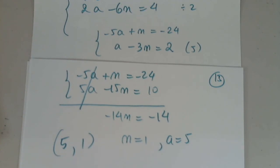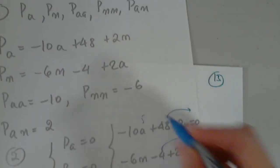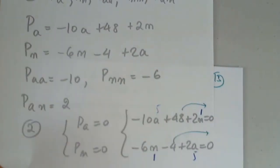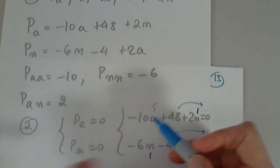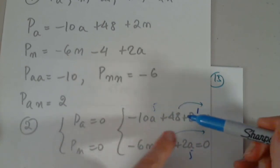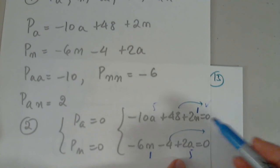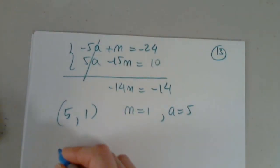So I claim that the system has the following solution. a comma n. So 5 comma 1. To make sure, I'll go back and check. So here is the system. a is 5. And n is 1. I just want to make sure. So negative 50 plus 48 is negative 2. Negative 2 plus 2 is 0. Yes. Negative 6 minus 4 is negative 10. 2 times 5 is 10. Yes. I have no doubt that 5 comma 1 is the solution.